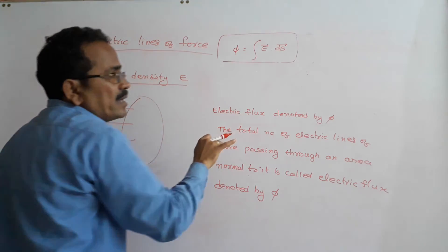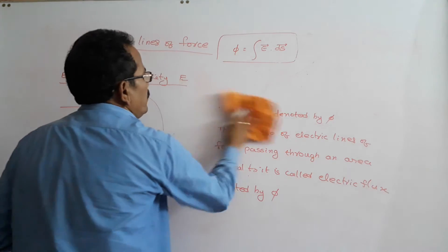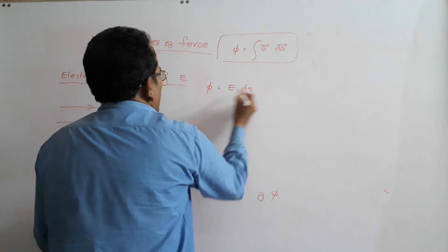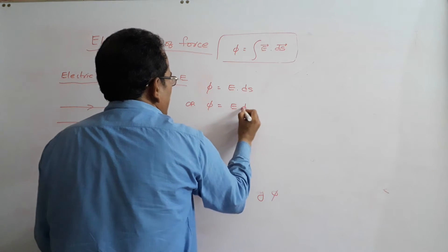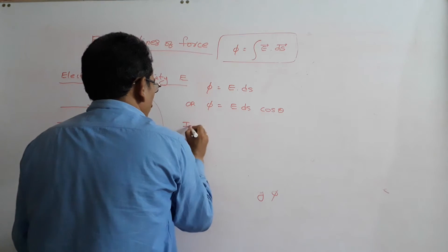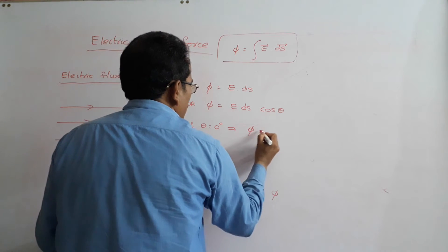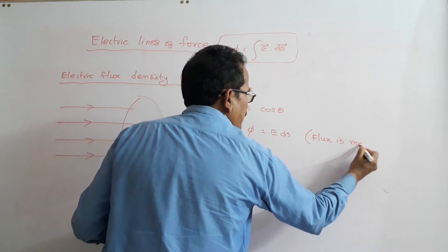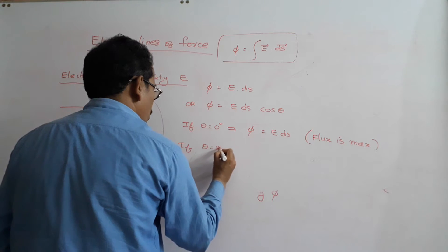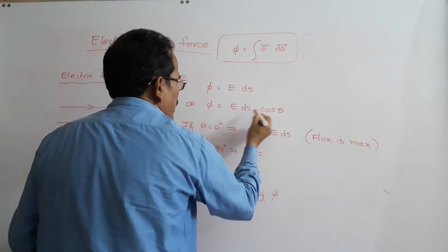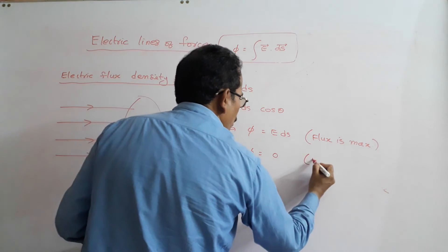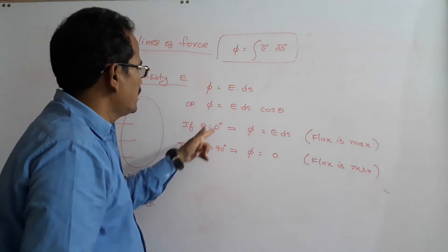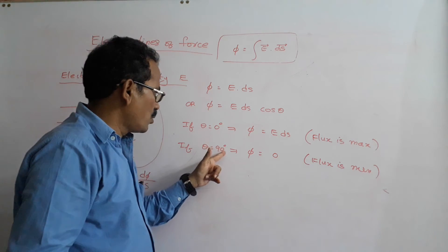Phi equals E dot ds, or phi equals E ds cos theta. If theta equals 0 degrees, phi equals E ds — flux is maximum. If theta equals 90 degrees, phi equals E ds cos 90 equals 0 — flux is minimum. So when the angle between E and ds is 0 degrees, flux is maximum; when theta equals 90 degrees, flux is minimum.